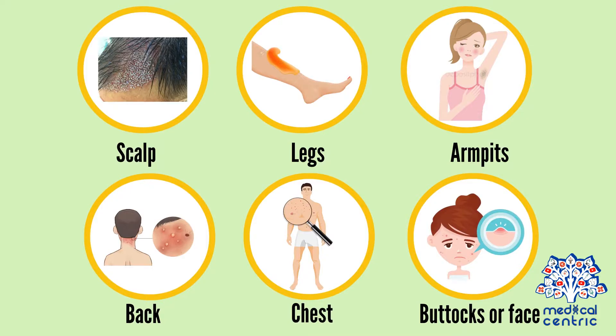Folliculitis can appear anywhere there is hair, but it's most likely to show up on the scalp, legs, armpits, back, chest, buttocks, or face.